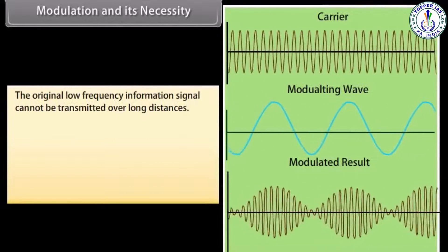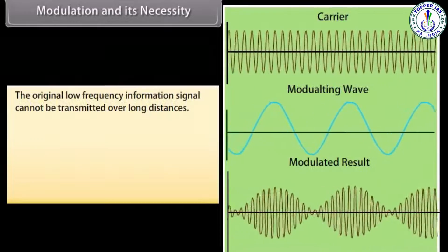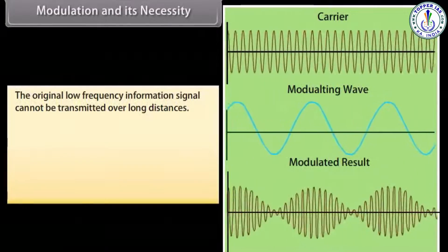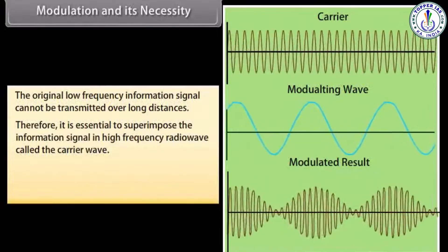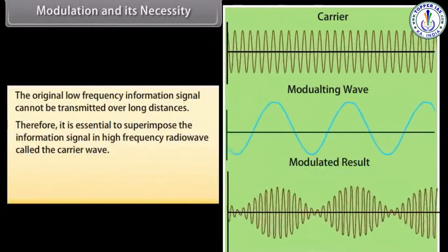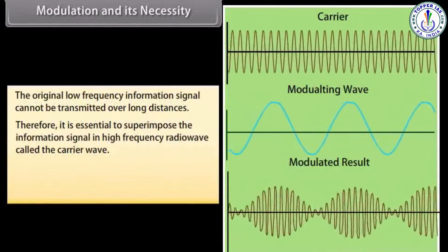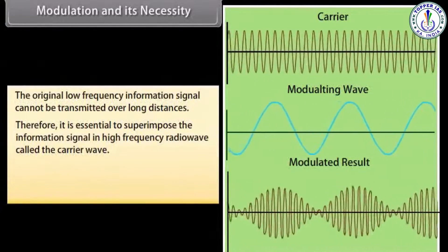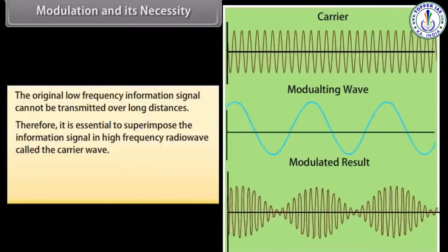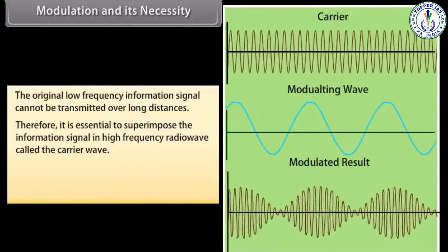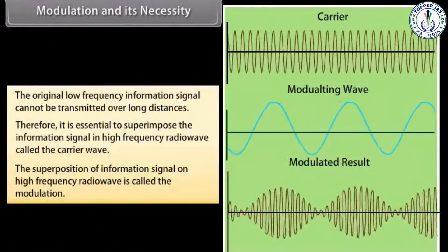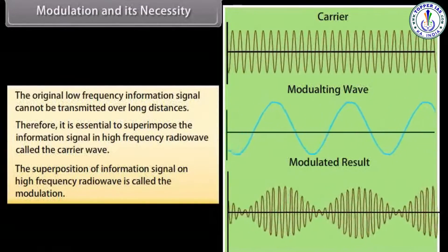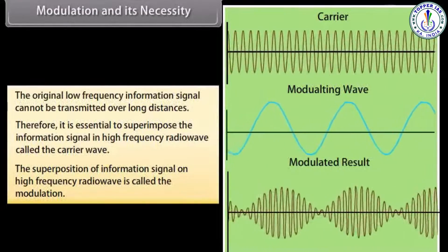The original low frequency information signal cannot be transmitted over long distances. Therefore, it is essential to superimpose the information signal on a high frequency radio wave called the carrier wave. The superposition of the information signal on the high frequency radio wave is called modulation.